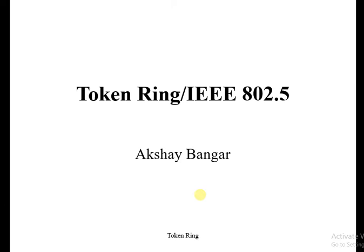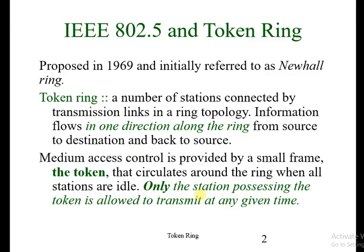Token ring uses a special 3-byte frame called a token that travels around a logical ring of workstations or servers. This token passing is a channel access method providing fair access for all stations and eliminating the collision of contention-based access methods. The IEEE defines the standard IEEE 802.5 for token ring, which was proposed in 1969.